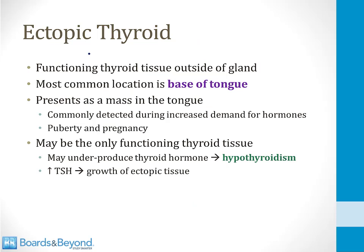Sometimes babies are born with an ectopic thyroid — functioning thyroid tissue outside of the gland. Given the embryology, it makes sense that the most common location for ectopic thyroid tissue is at the base of the tongue, where some thyroid tissue gets left behind and does not descend into the neck. This presents as a mass in the tongue, commonly detected at times of high hormonal demand such as puberty or pregnancy, when growth of that ectopic tissue is stimulated.